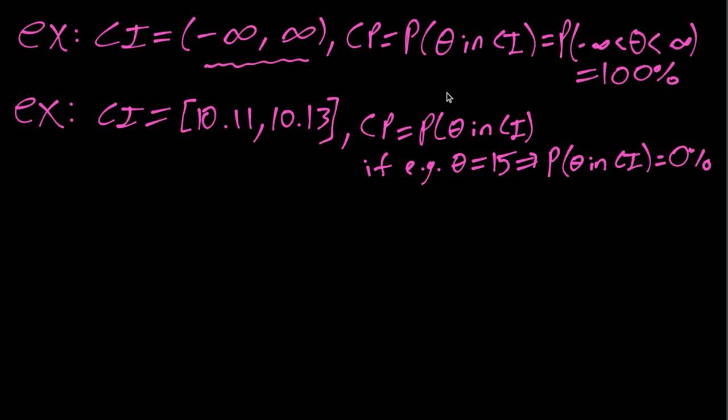So unless the true theta happens to be in this very narrow range, we'll have a zero percent coverage probability, which is sort of like the opposite problem we had before when our interval was too wide.